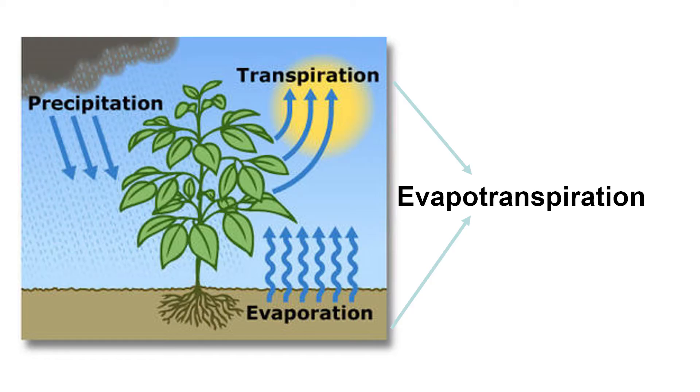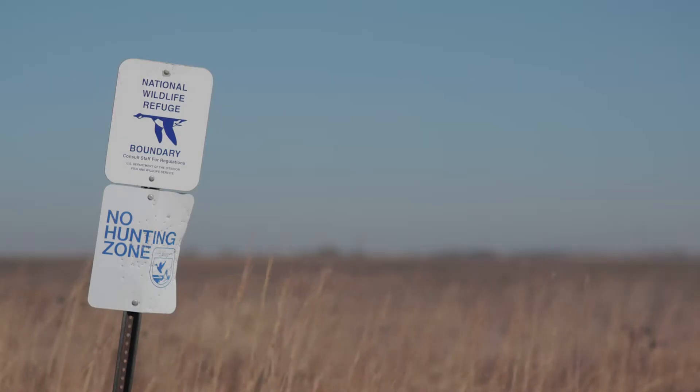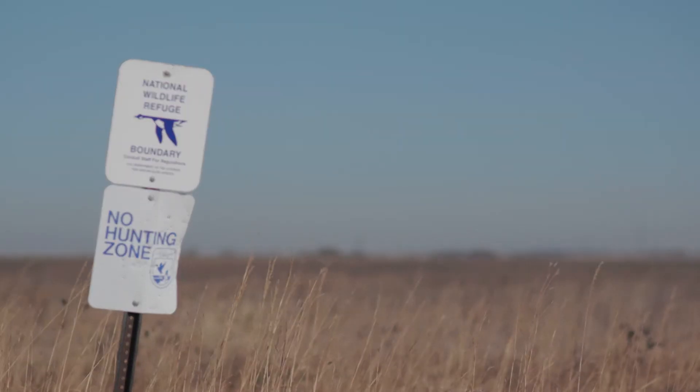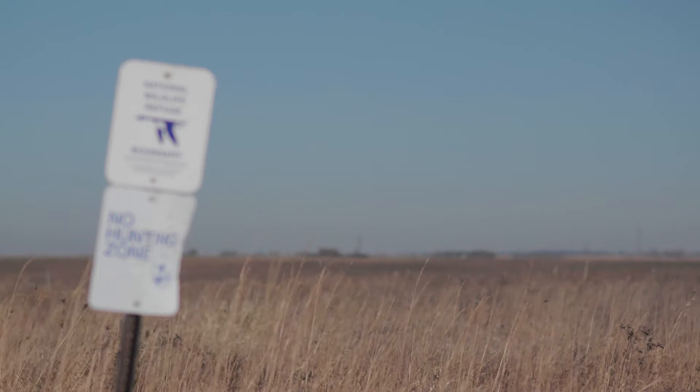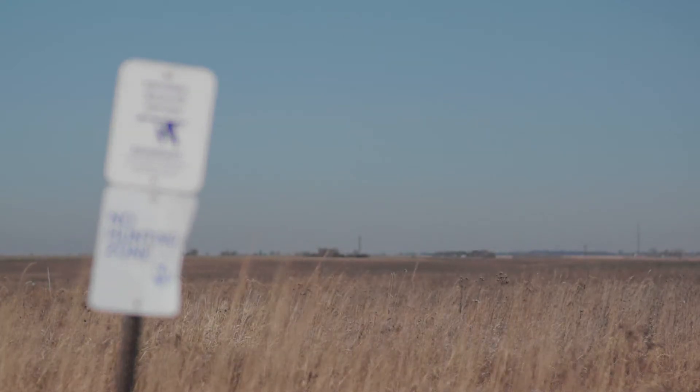This is a landscape where precipitation falls and most of it infiltrates and is taken up by the plants and evapotranspired back into the atmosphere. So a landscape with native prairie is an infiltration-based landscape. You can see the roughness of this land — we're not going to get a lot of runoff. Most everything soaks in like a sponge.